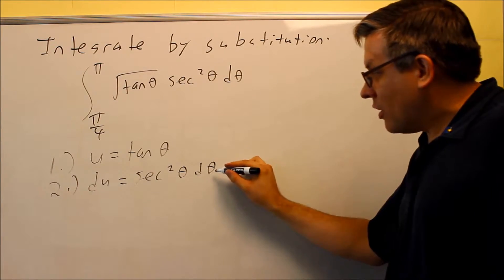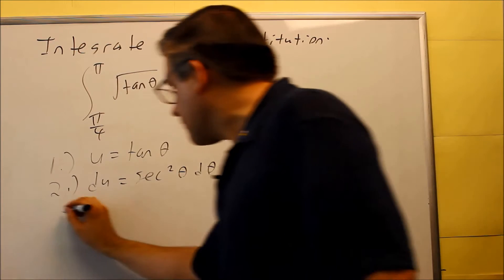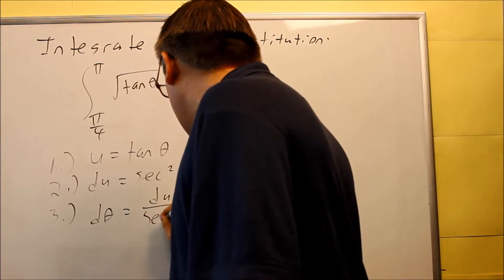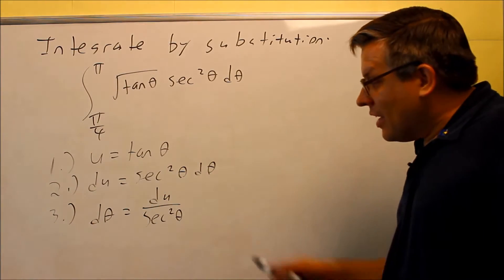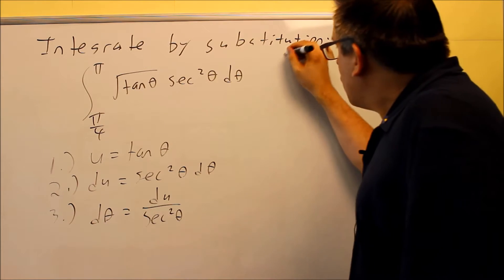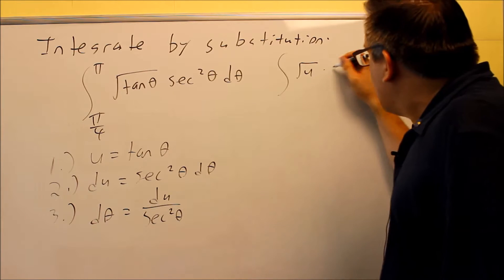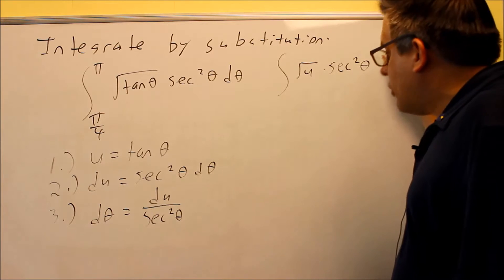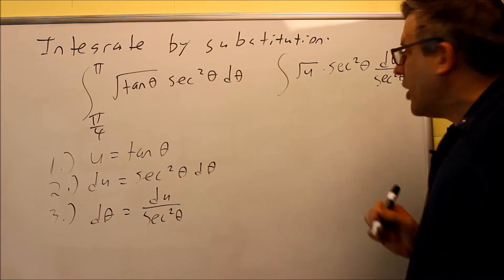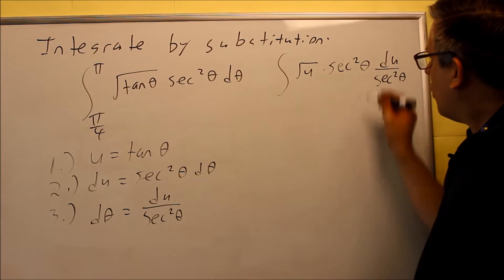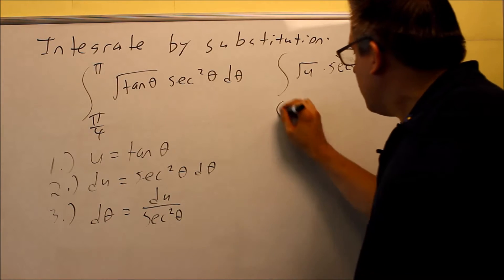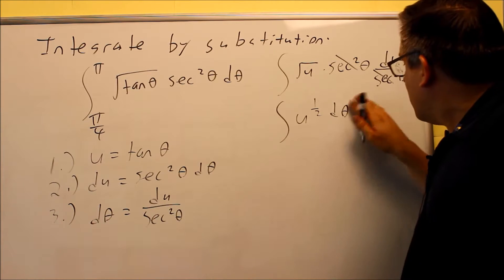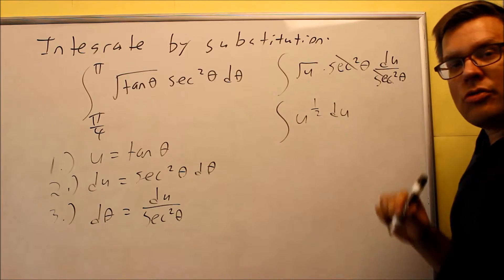Don't forget d theta at the end — it's got to match the variable we already have, which is theta. For step 3, we're going to solve for d theta: that's du over secant squared theta. In the same step, we substitute back into the original problem. We get square root of u, still have the secant squared there, and then d theta becomes du over secant squared theta. Now we cancel both of those out, leaving us with u to the one-half and du.